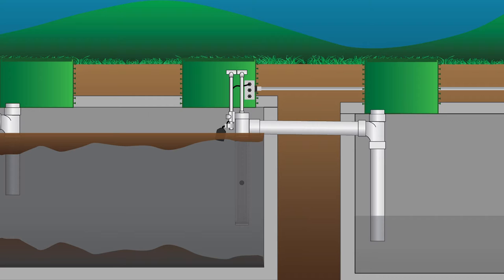We also have effluent filters that retrofit to an existing sanitary tee, which is convenient if you have an existing system with no effluent filter and you decide you want one installed. You can actually retrofit your sanitary tee with that. They're nice products, but they tend to be somewhat limited in capacity, so you'd have to clean those more frequently than some of the commercially available pre-installed units.